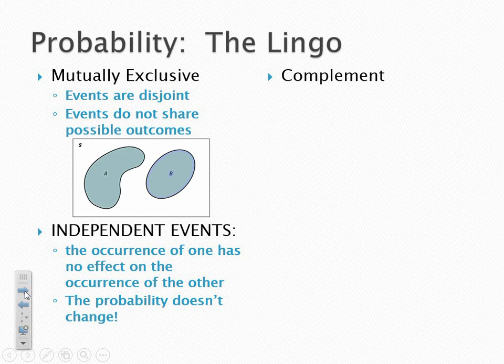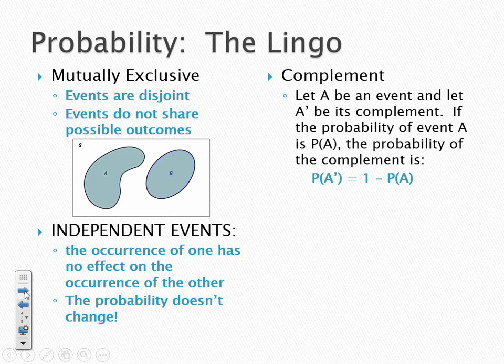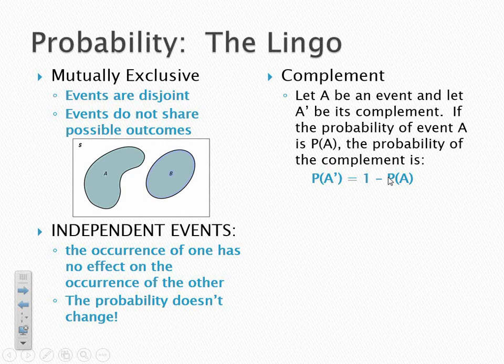Our last term to cover is the idea of a complement — and notice it's spelled with an E, not an I. If I have an event A, then A-prime is its complement. The probability of the complement is simply the opposite — it's one minus the probability of the event occurring. If the news said there's a 70% chance of snow tomorrow, the complement is the probability it does not snow. So if there's a 70% chance of snow, there's a 30% chance it does not snow. Those two events combined add up to one — that's the idea of a complement.